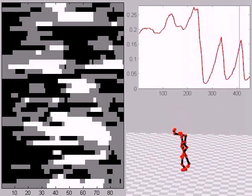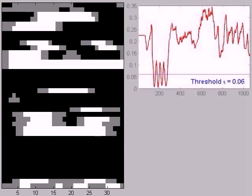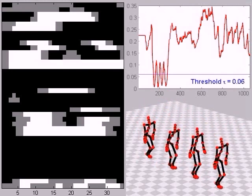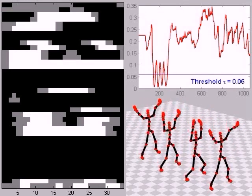Now, suppose we want to retrieve all jumping jacks from a motion database. First, we compute the matching curve with respect to the jumping jack template. Then, each local minimum below some quality threshold indicates a hit. In this case, there are four hits.